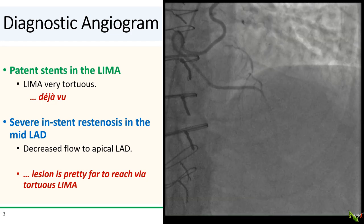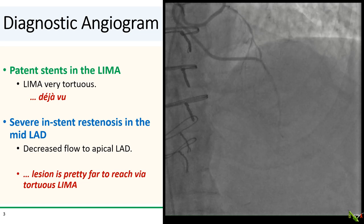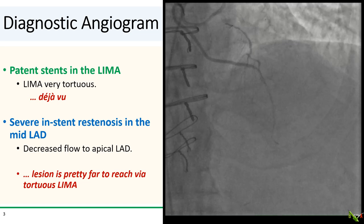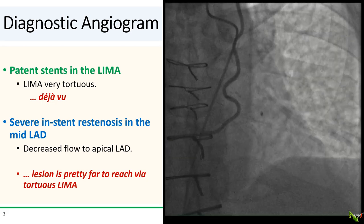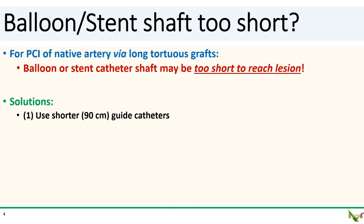Unfortunately, the LAD lesion is pretty far to reach, especially with the long tortuous LIMA. So is our balloon or stent catheter going to be able to reach it? Occasionally during PCI of a native artery via a long tortuous graft, you might find yourself in a situation where your balloon or stent catheter shaft is simply too short to reach the lesion. So what do you do?